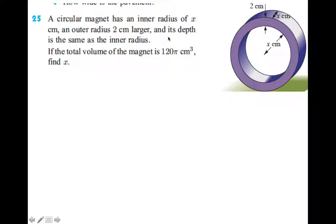And it says its depth is the same as the inner radius. This is x. The depth, or in this case when you look at the magnet how deep it goes back there, it's also known as the height of x. So x and x.